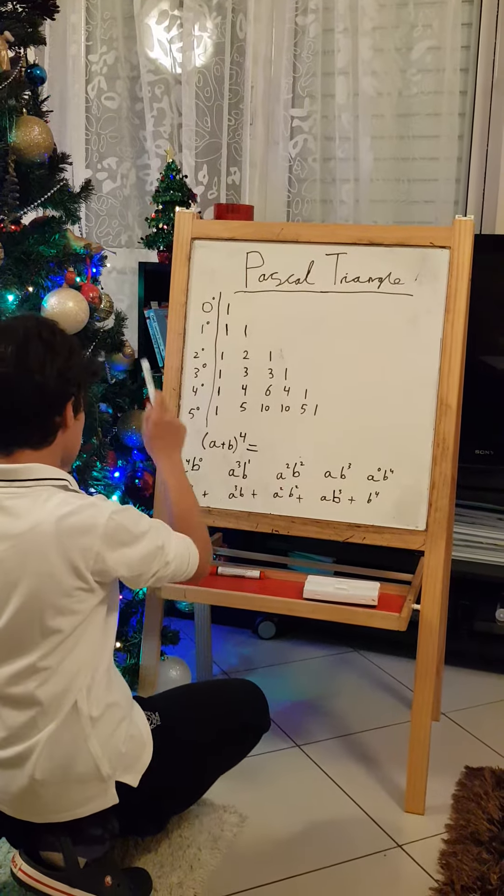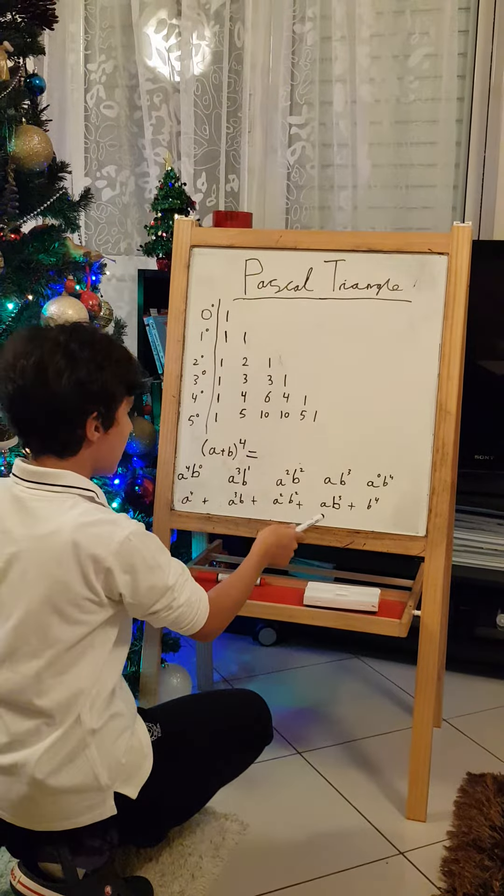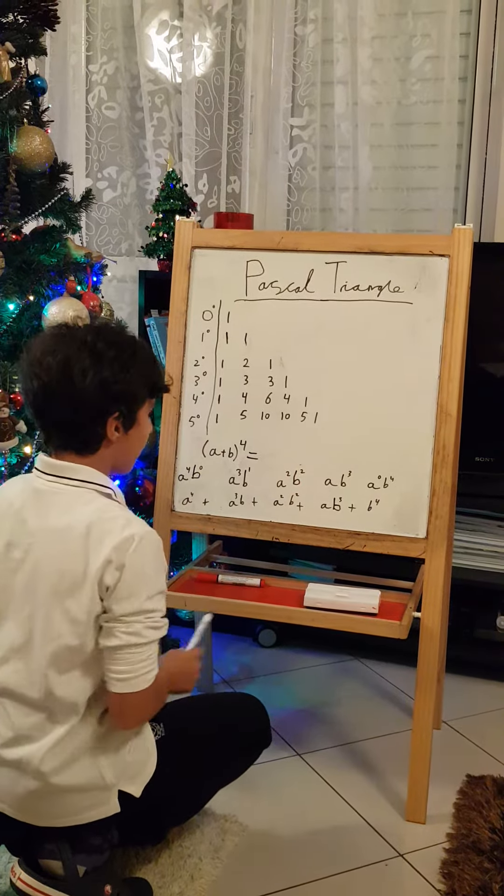What does this make? A to the power of 4, A cube B, A square B square, A B cube, B^4.